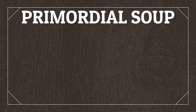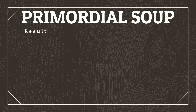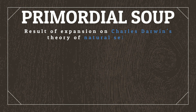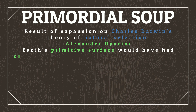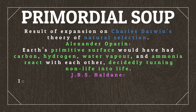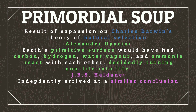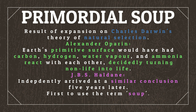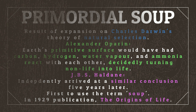The final hypothesis we'll discuss is the Primordial Soup Hypothesis, which, while not directly proposed by Charles Darwin, was the result of expansions on his theory of natural selection. Soviet biochemist Alexander Oparin argued that Earth's primitive surface would have had carbon, hydrogen, water vapour, and ammonia react with each other to form the first organic compounds, decidedly turning non-life into life. English scientist J.B.S. Haldane independently arrived at a similar conclusion five years later, and was the first to use the term 'soup' to describe the collective pools of organic material in his 1929 publication, The Origins of Life.